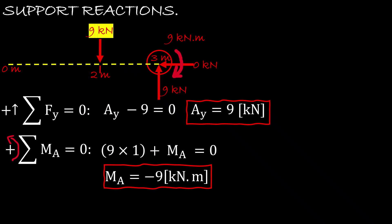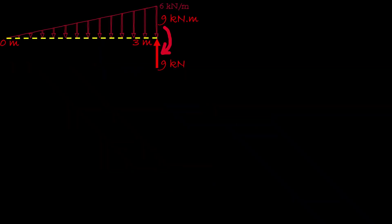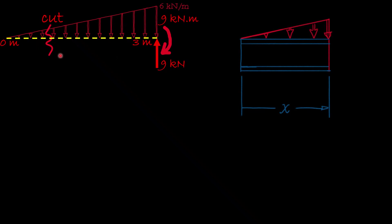The negative result means our initial assumption that the moment at A is counterclockwise is wrong — it is actually clockwise. Now we want to find the internal shear and internal net moment due to the external loads: nine kilonewtons, the external moment of nine kilonewton-meters, and the distributed load of intensity six kilonewtons per meter running from zero to three. We make a cut at an arbitrary location x.